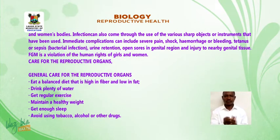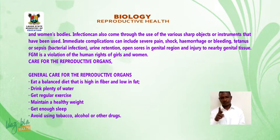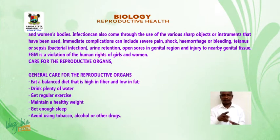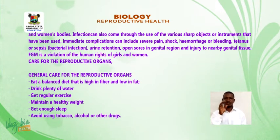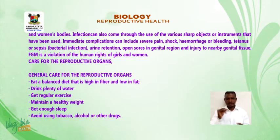Care for the reproductive organs — general care: eat a balanced diet that is high in fiber and low in fat, drink plenty of water, get regular exercise, maintain a healthy weight, get enough sleep, and avoid using tobacco, alcohol, or other drugs.